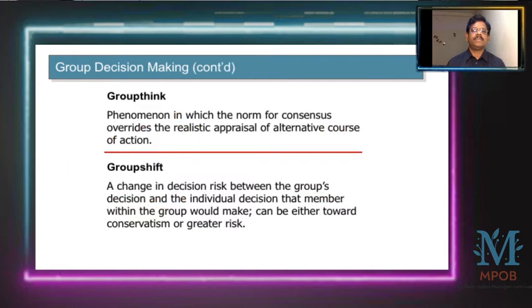Group decision making starts with the groupthink phenomenon, in which the norm for consensus overrides the realistic appraisal of alternative courses of action. Then there is group shift, which is a change in the relationship between group decisions and individual decisions — where members within the group can shift either towards conservatism or greater risk.